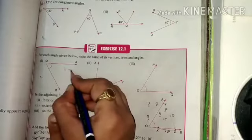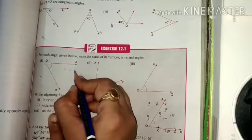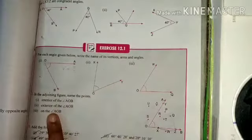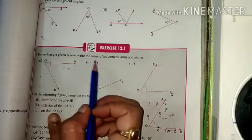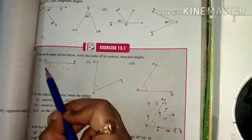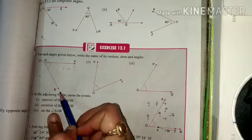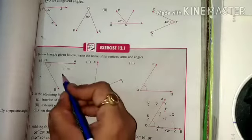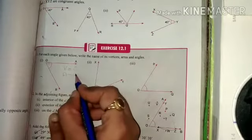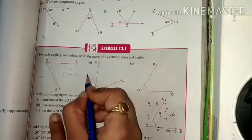Vertex is equal to O. And arms? Arms are OA and OB. These are the arms of this angle. So arms are OA and OB.